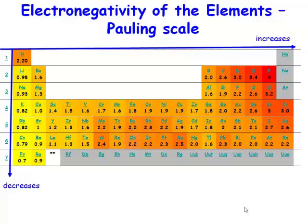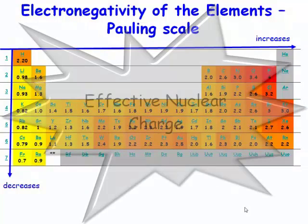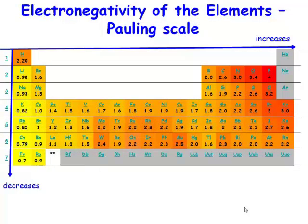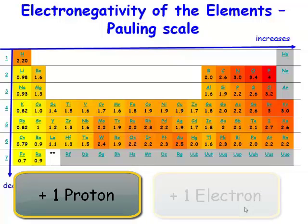Why is there this trend that electronegativity increases from left to right across the periodic table? Well, the origin of that trend is the concept of effective nuclear charge. As you go from left to right in the periodic table, what happens? You add a proton and you add an electron.